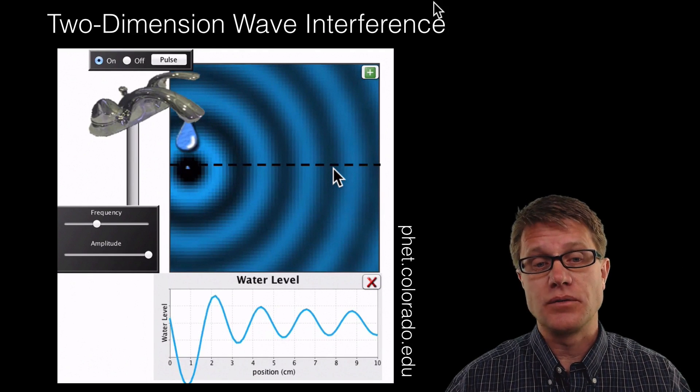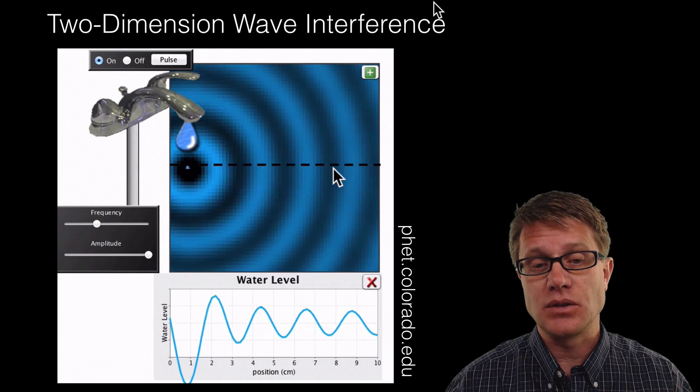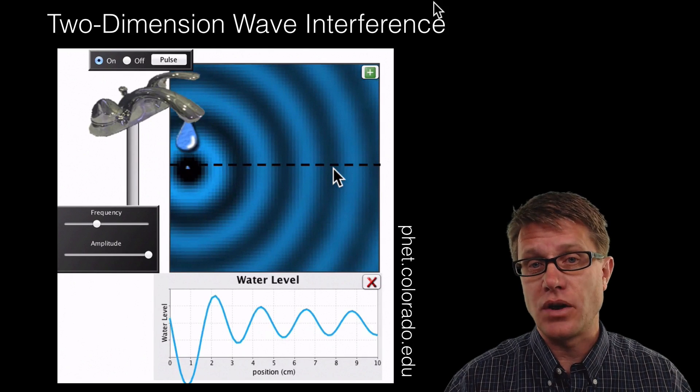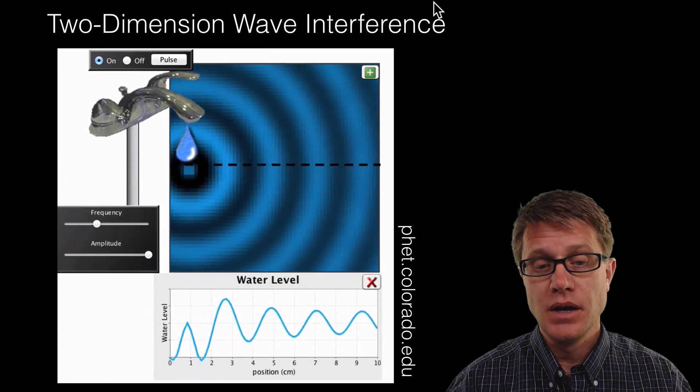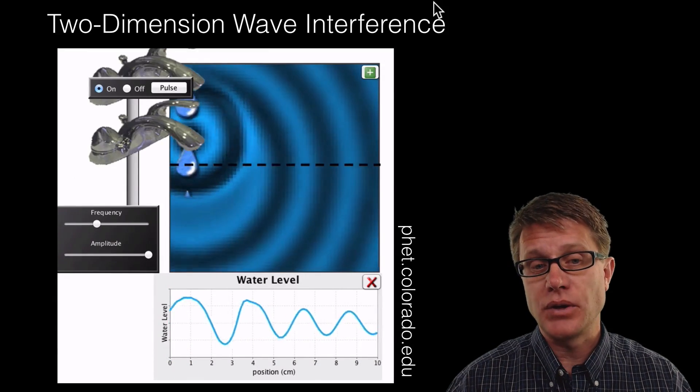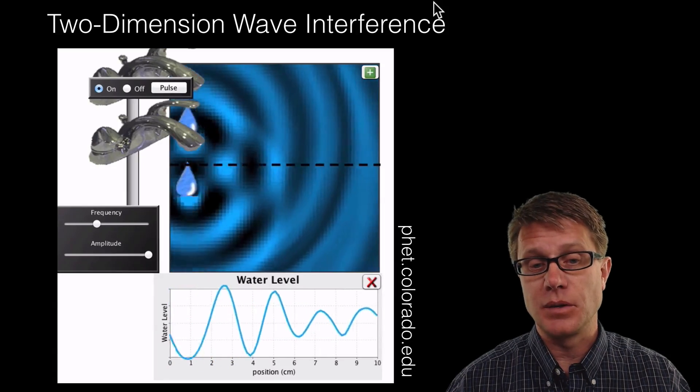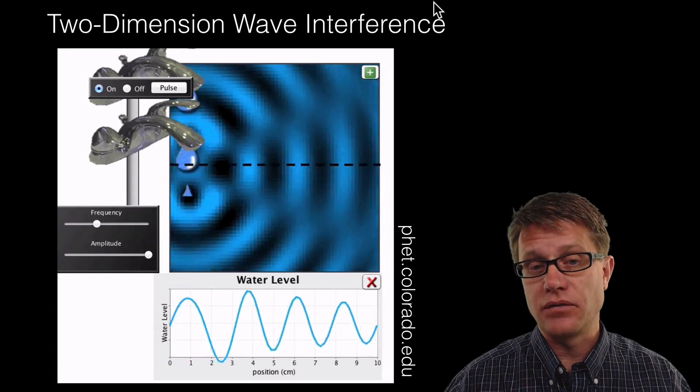Now let's go to two dimensions. If we're looking at two dimensions in this simulation, I've got water being dropped which is creating these wave fronts that move out from that dropped water. And we're measuring it in the middle. But what happens if we have two drips of water coming down? Now we have two wave fronts.